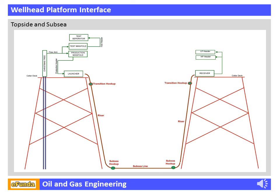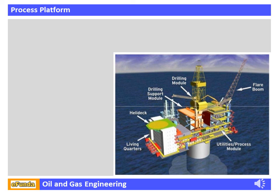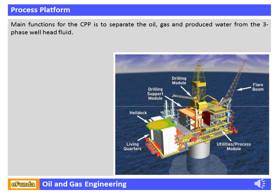The term subsea is frequently used in connection with oceanography and marine or ocean engineering. It covers Remotely Operated Vehicles (ROVs), Autonomous Underwater Vehicles (AUVs), submarine communications or power cables, seafloor mineral mining, oil and gas, and offshore wind power. The Central Processing Platform (CPP) is used for processing the wellhead fluid coming through the riser from the wellhead platforms. The main function of the CPP is to separate oil, gas, and produced water from the three-phase wellhead fluid.